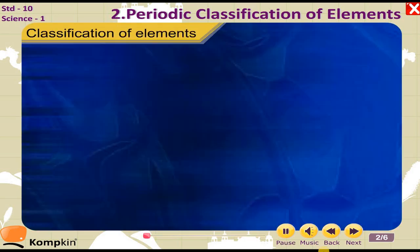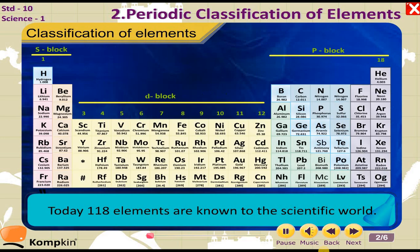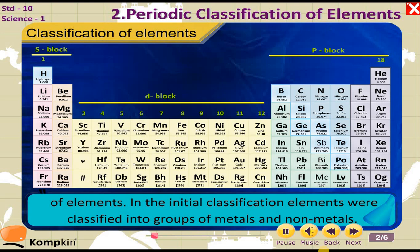Classification of Elements. We have learnt in previous standard that all the atoms of an element are of only one type. Today, 118 elements are known to the scientific world. To ease the study of such a large number of elements, scientists started different methods of classification of elements. In the initial classification, elements were classified into groups of metals and non-metals.